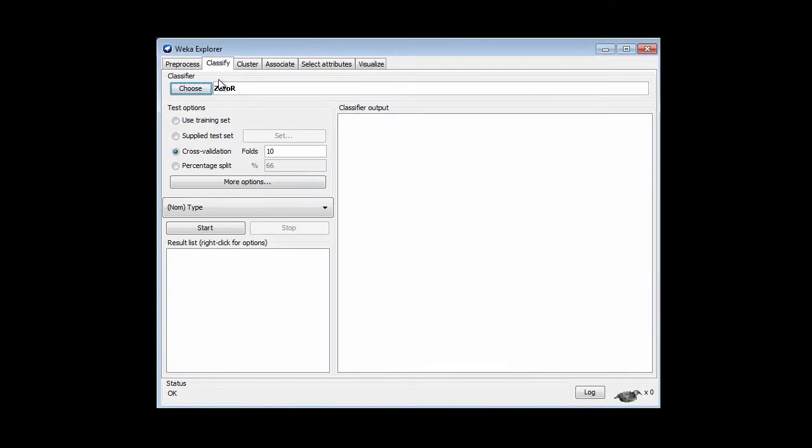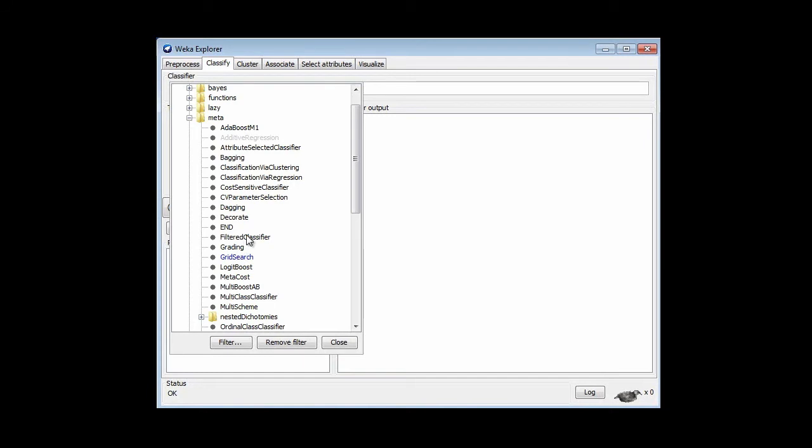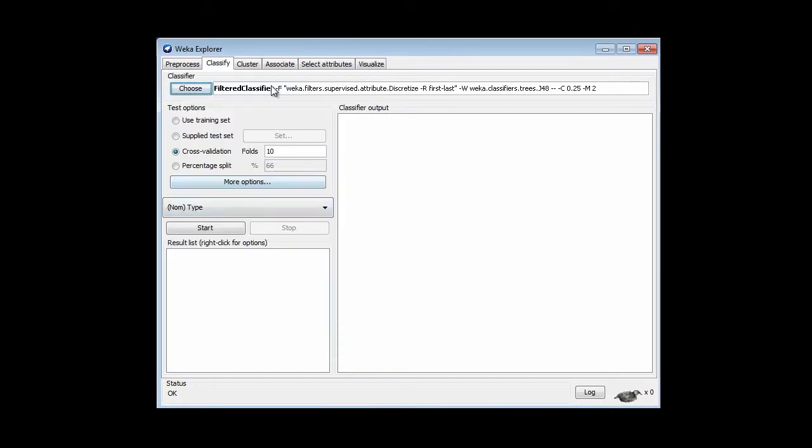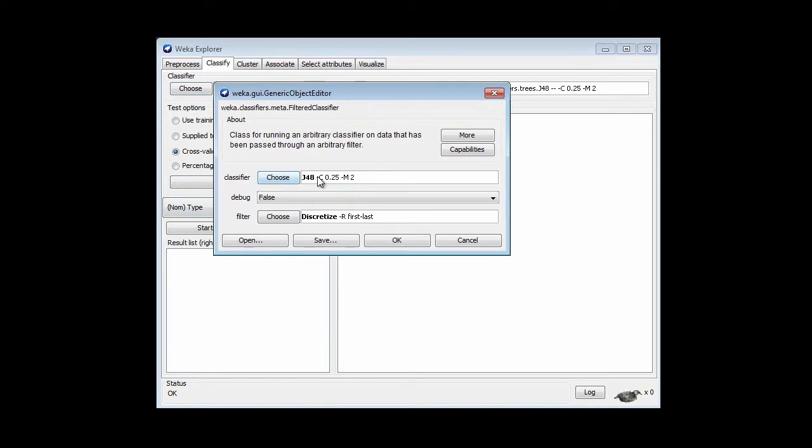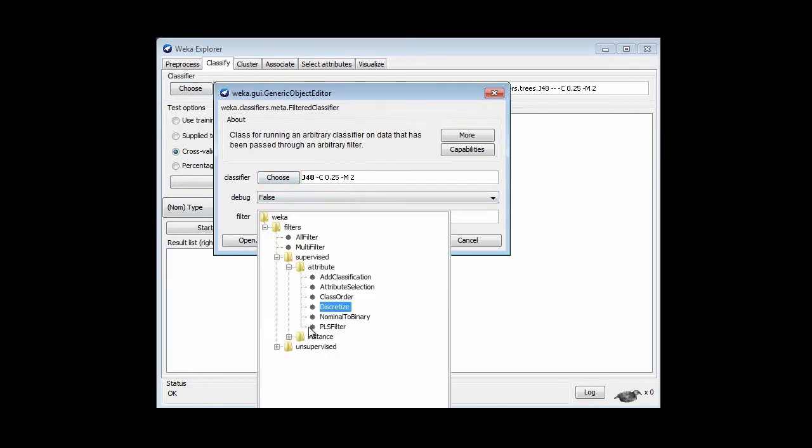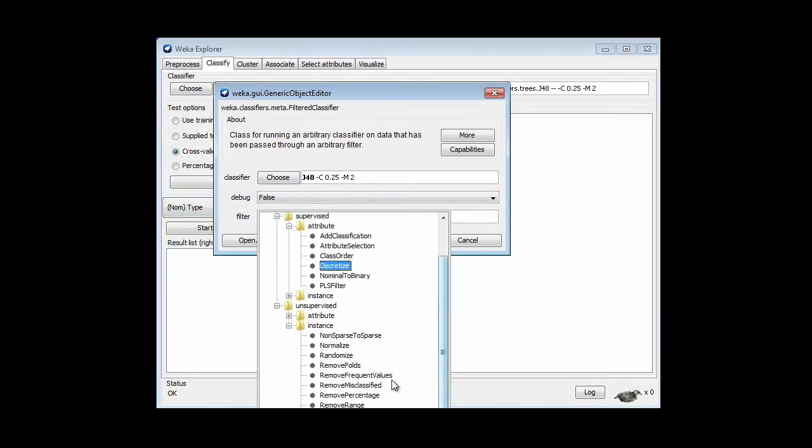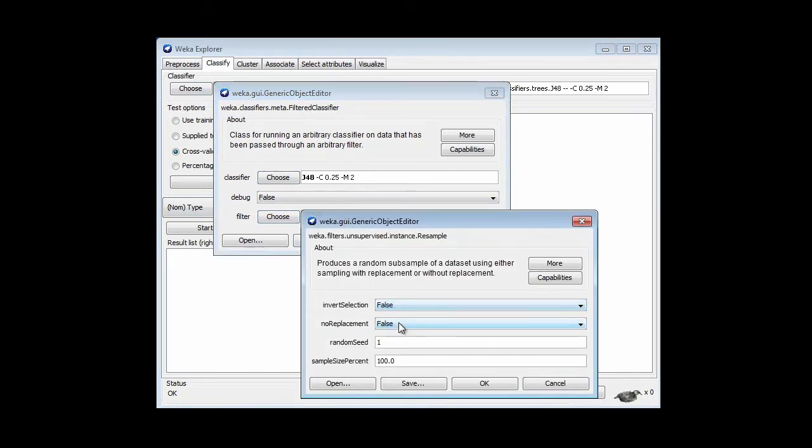I've opened the glass data set here. I'm going to go to Classify, and I'm going to find the filtered classifier. Then I'm going to check. I'm going to use J48 as the classifier, and for the filter, I'm going to use the resample filter. It's an unsupervised instance filter. We're resampling instances. There it is. Let's look at this parameter. We can sample with or without replacement. I would like to sample with no replacement, so I want to make that true. Let's say I want a 50% sample.